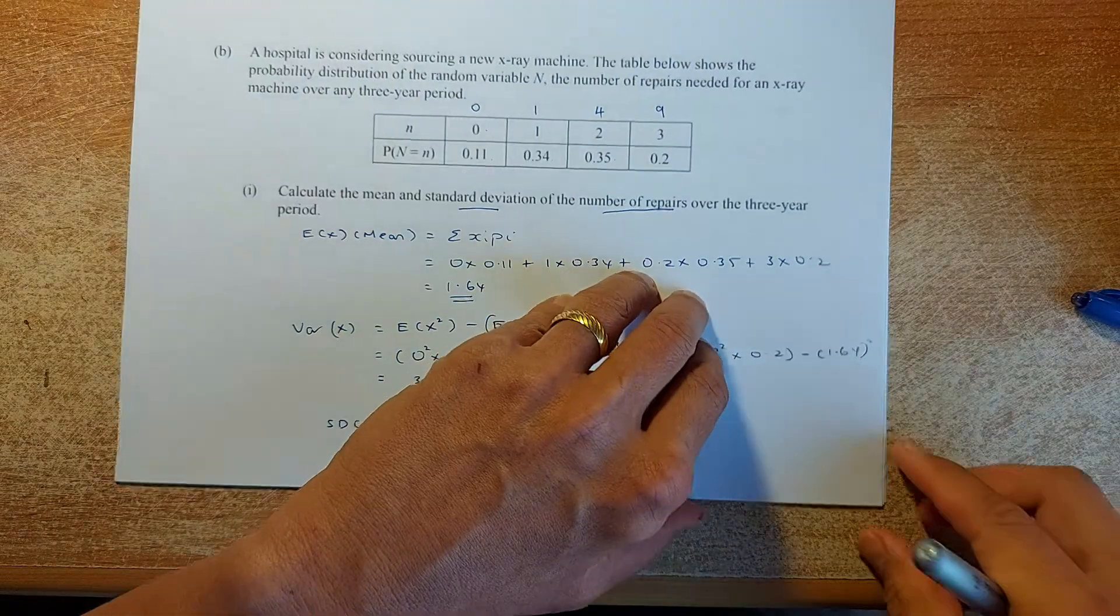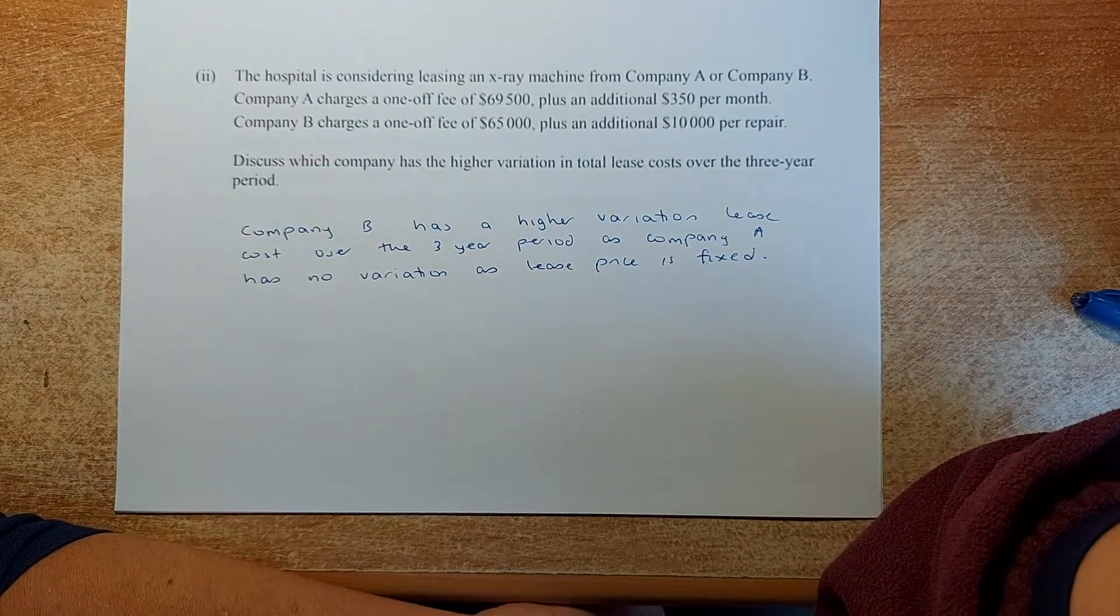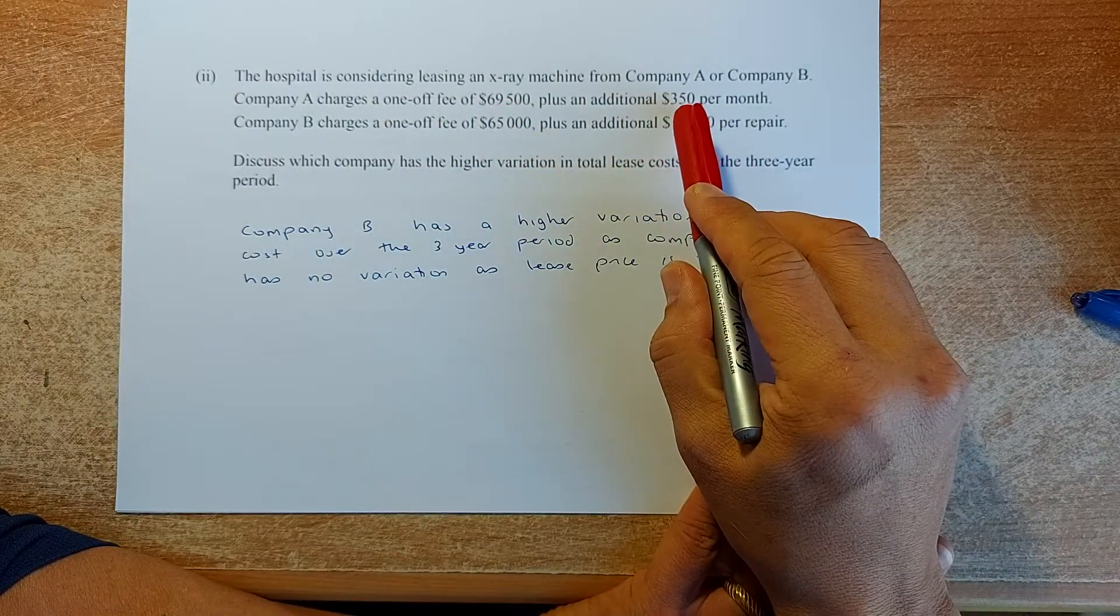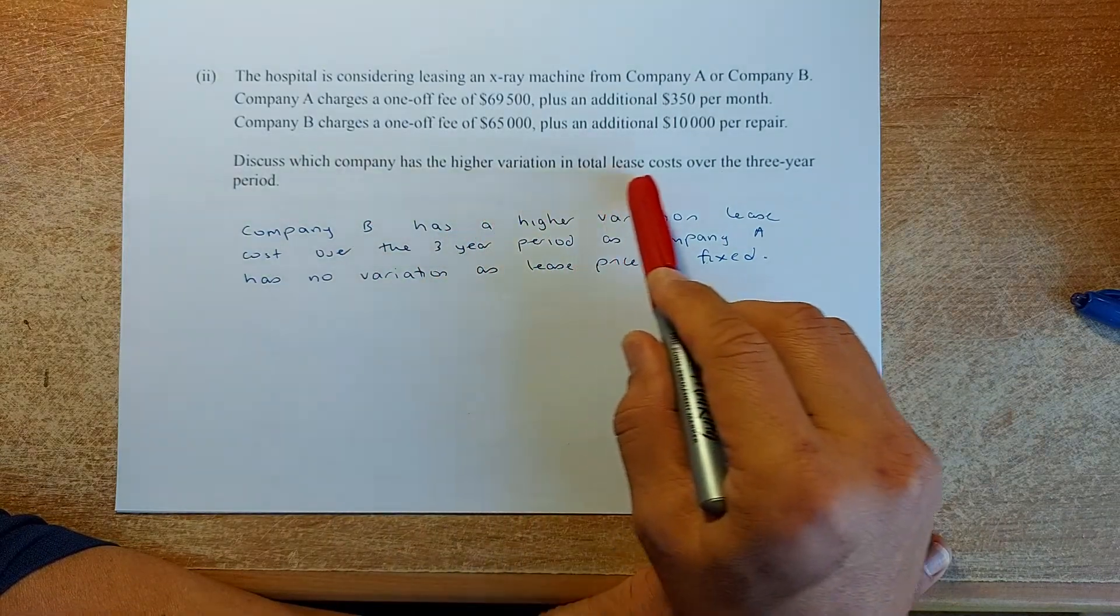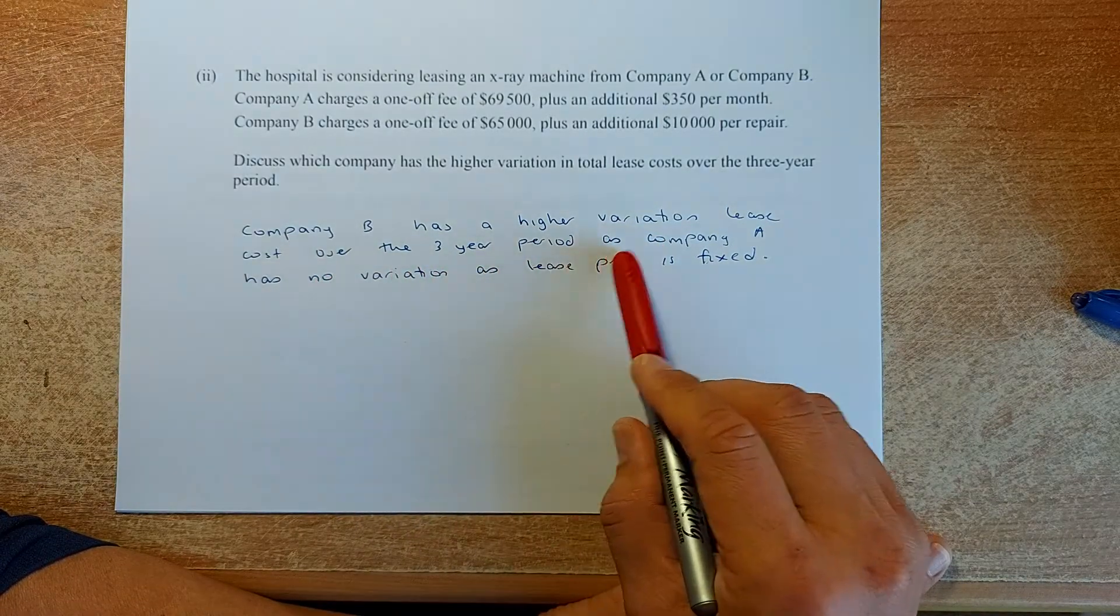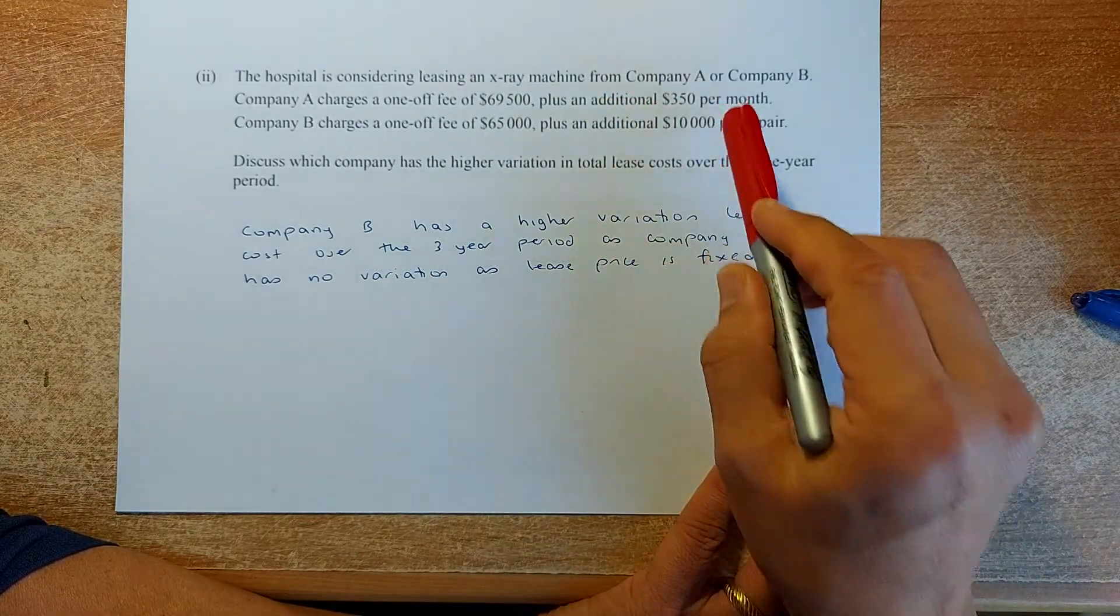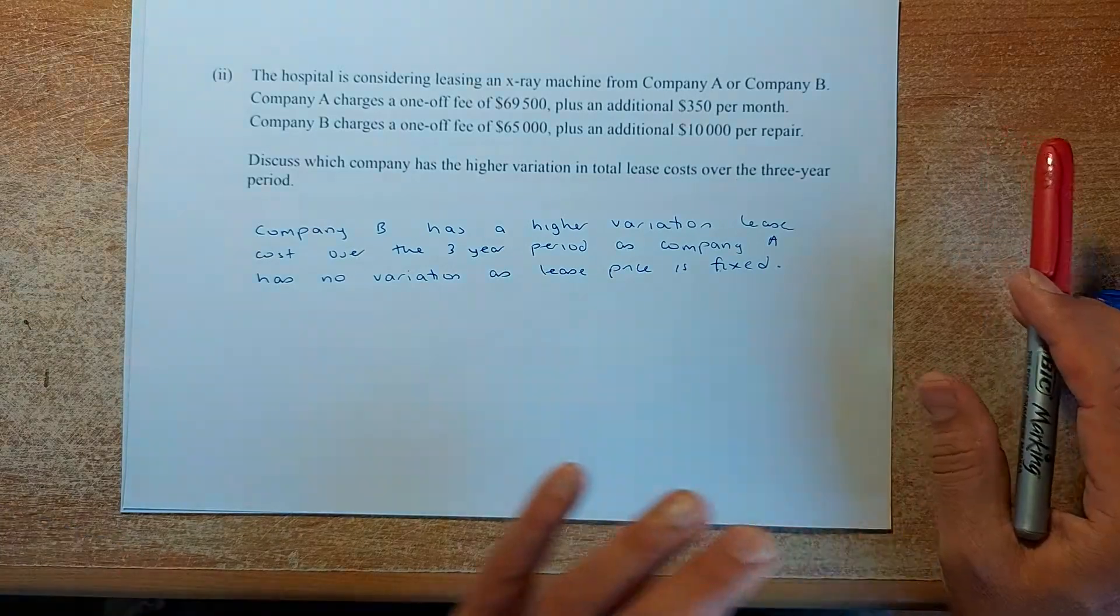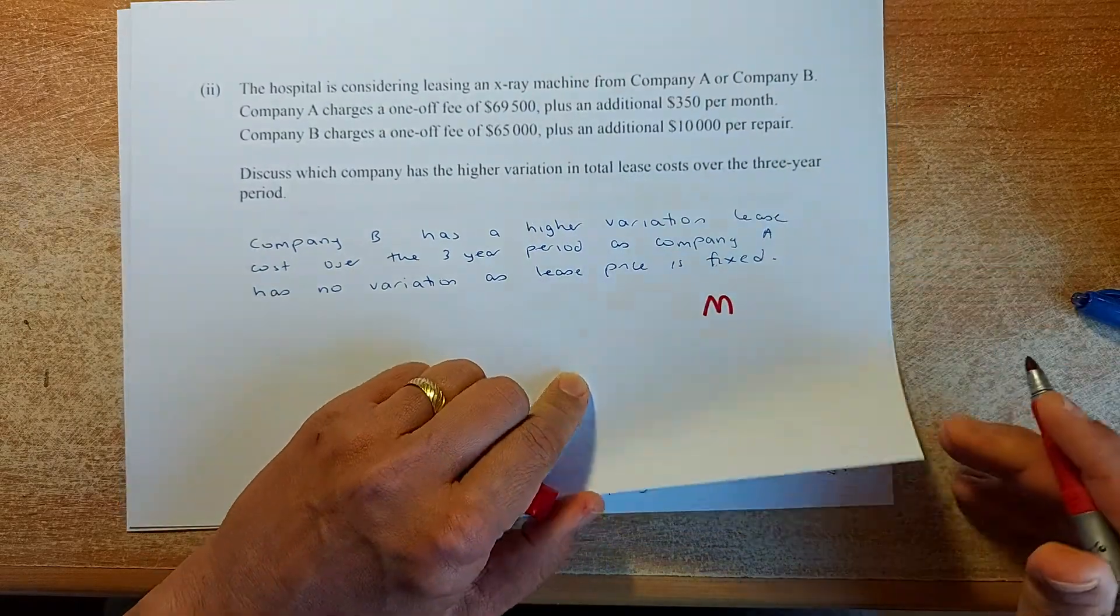Now the next question. The hospital is considering leasing an x-ray machine from company A or B. Company A charges $69,500 plus an additional $350 per month. Company B charges $65,000 plus an additional $10,000 per repair. Which company has higher variation over a three-year period? Company B has higher variation because company A has no variation as the lease price is fixed. They do not have any variation of the repair cost. Company B has higher variation.